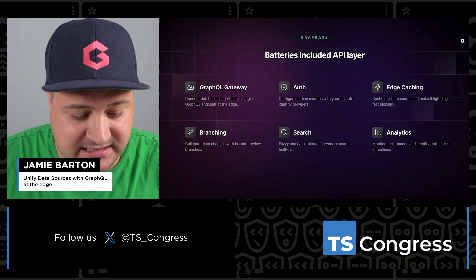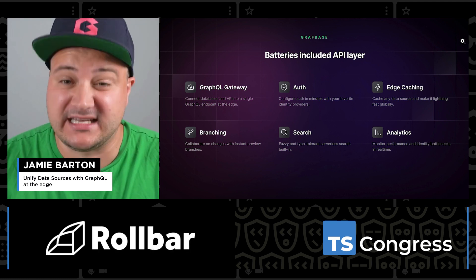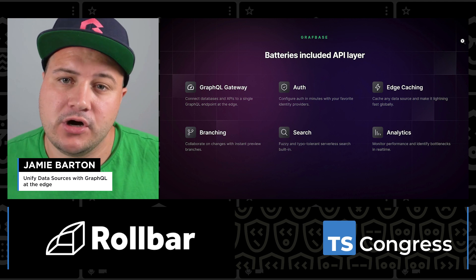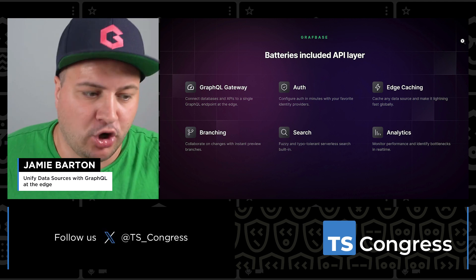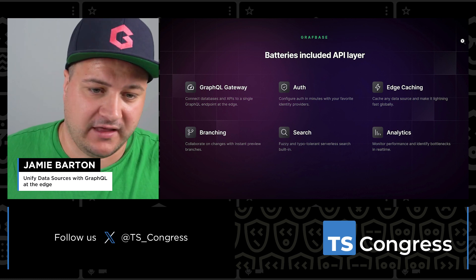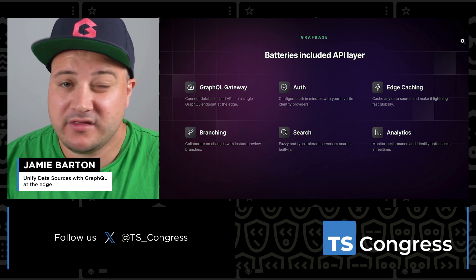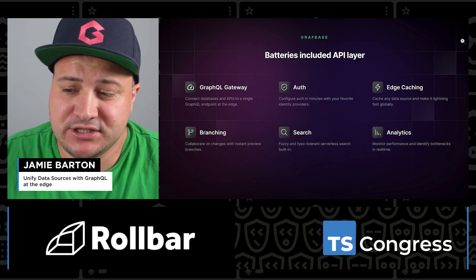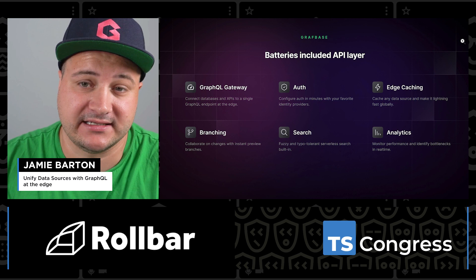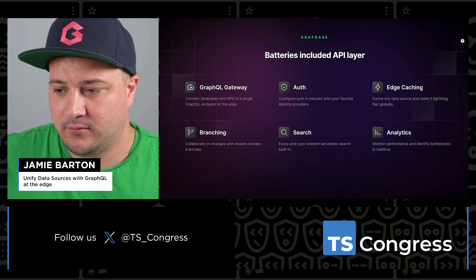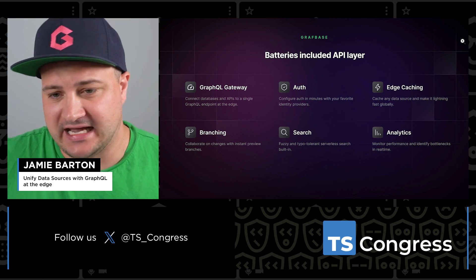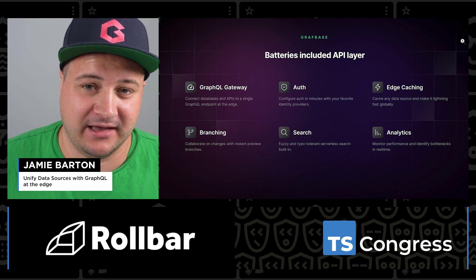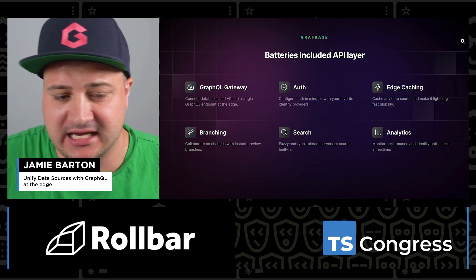GraphBase has this unified GraphQL API where all data sources live. On top of that, you can add auth — bring your own auth provider like Clerk or Auth0 — and then configure rules like this user can update but can't delete, or they can read and not write. All of that is configured within the configuration while actual user management happens elsewhere. We also do caching at the edge, which is baked into all projects. When you deploy and open a branch on GitHub, we automatically create a preview URL.